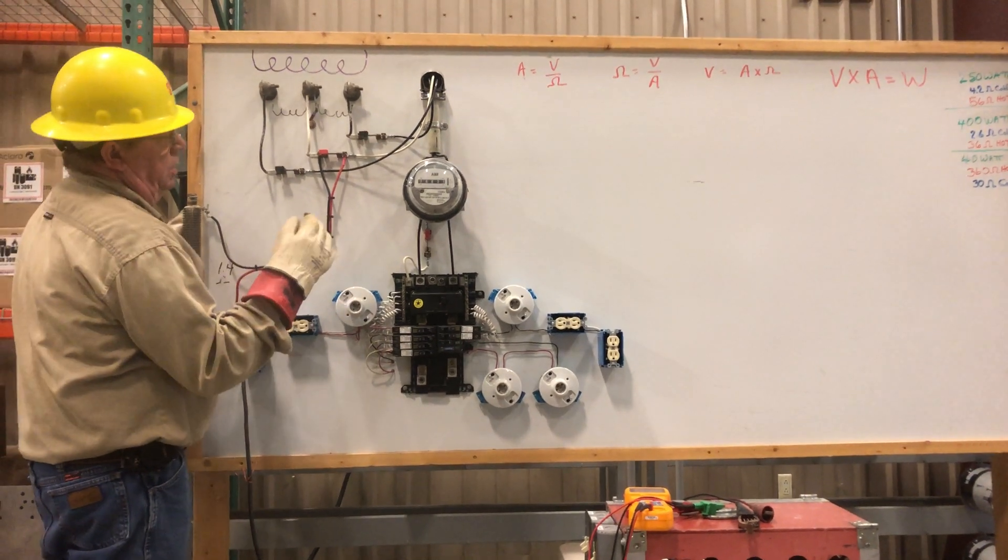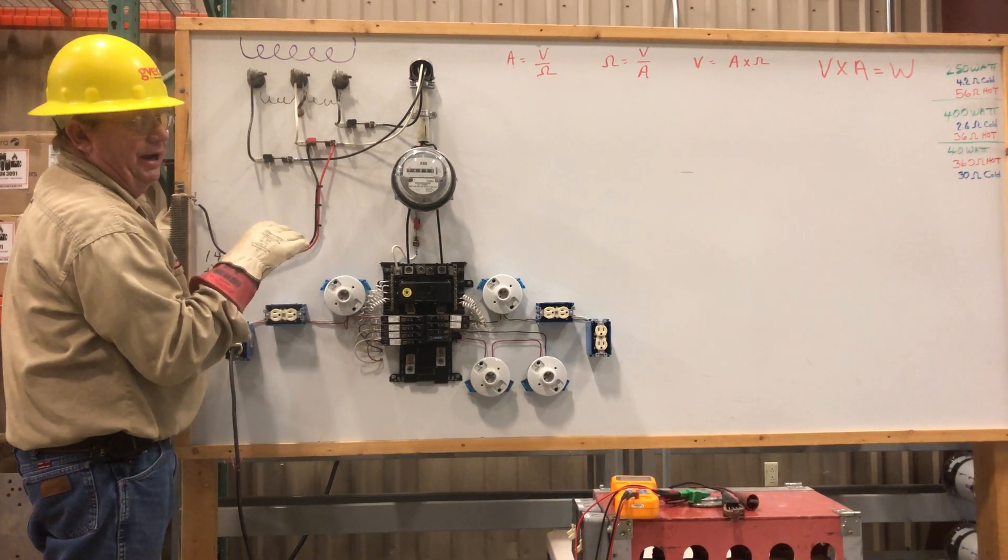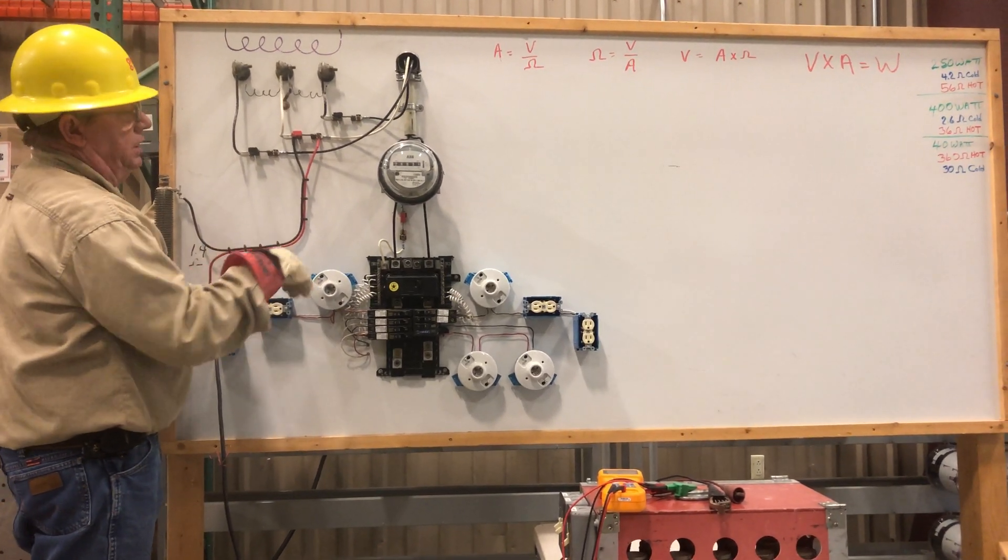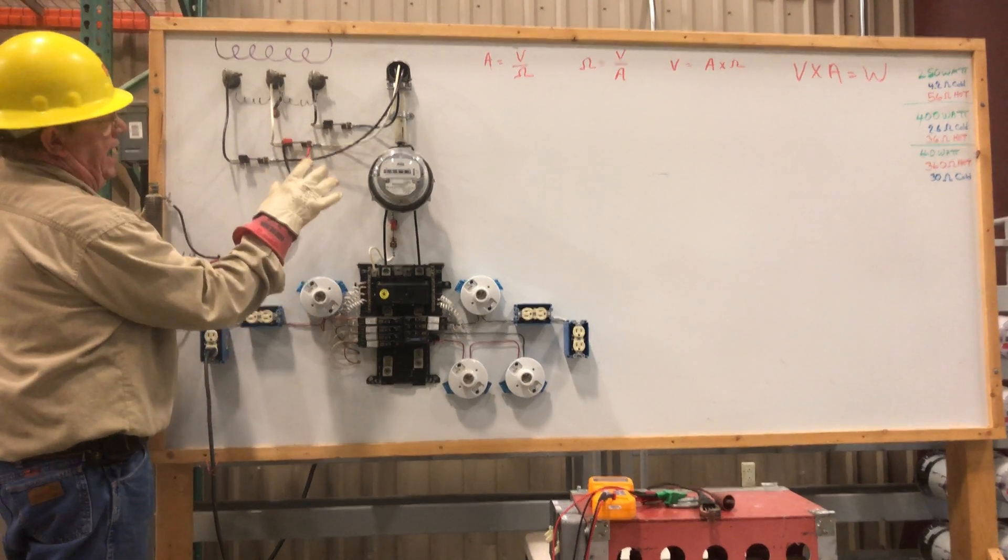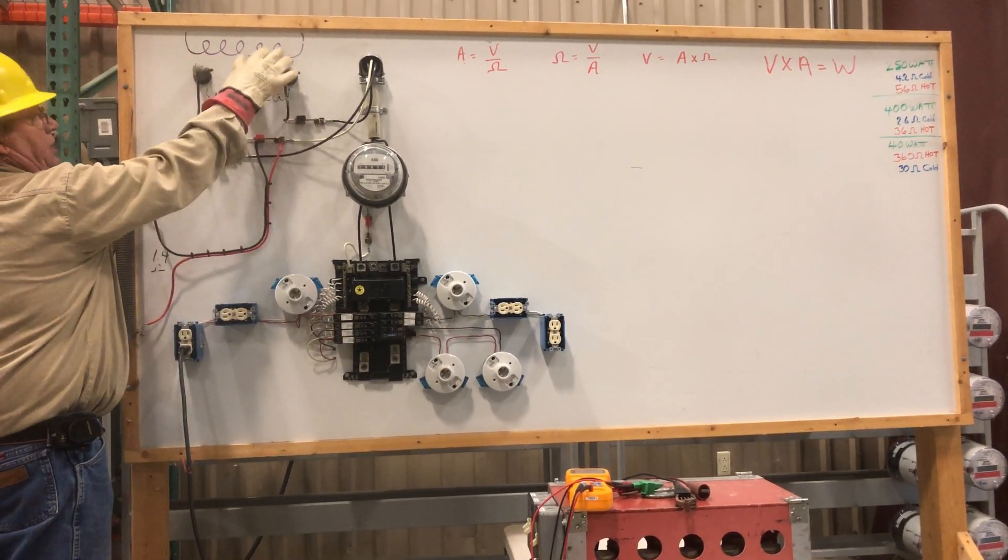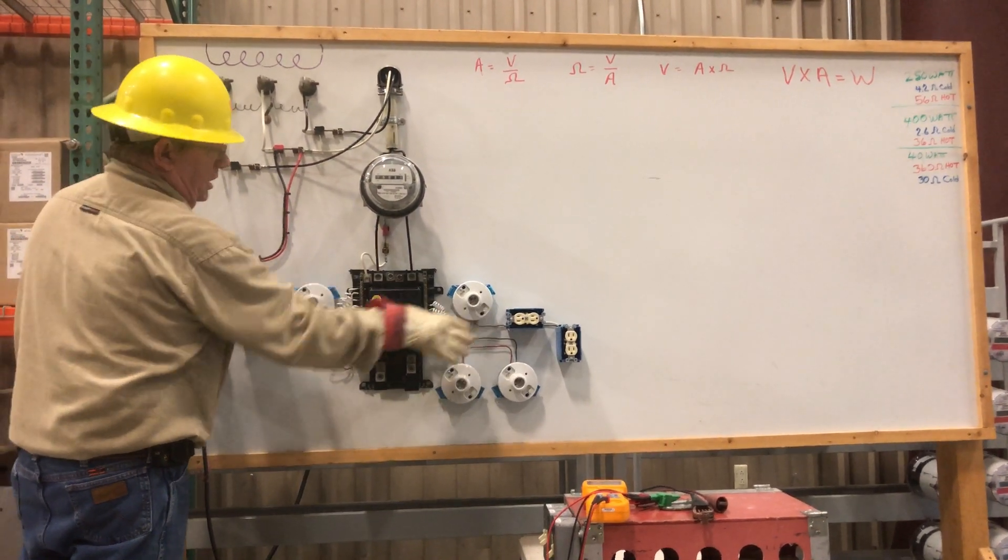All right, today we're going to talk about how you would troubleshoot a bad secondary neutral problem. We had some great guys build this board for me, and then I added what's going to look like the utility transformer, then the riser service entrance, and then the ladder.